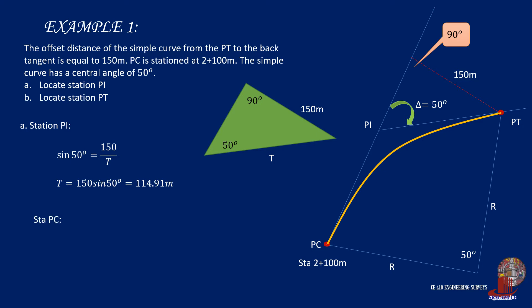We can then proceed to find the station of PI from station PC, which is 2 plus 100, and add T, which is 114.91 meters, giving 2 plus 214.91 meters. That is station PI.